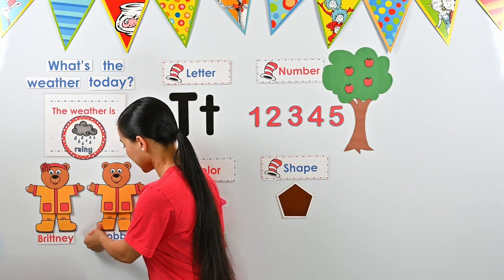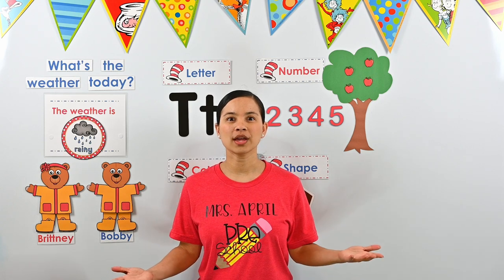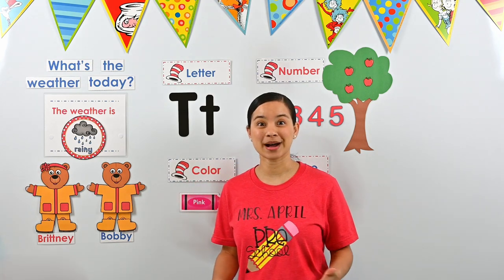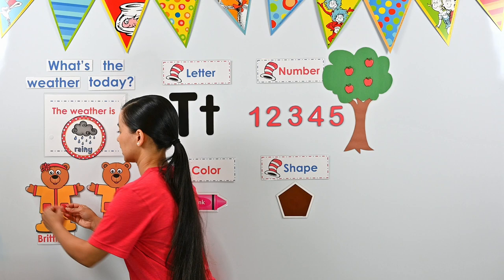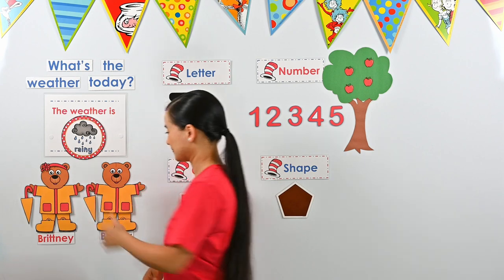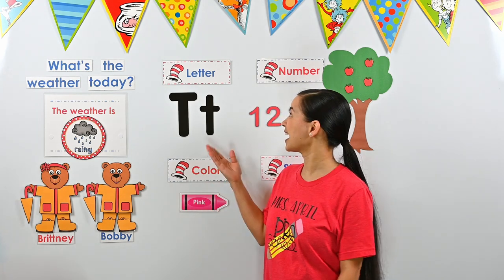Yellow rain boots for Brittany and Bobby — it matches their yellow raincoat and yellow rain pants. Oh wait, they're missing something. What are they going to use to protect their head from getting wet outside? Yes, they need an umbrella. An umbrella for Brittany and an umbrella for Bobby. There we go, now they're ready for the rainy day. Great job, friends!